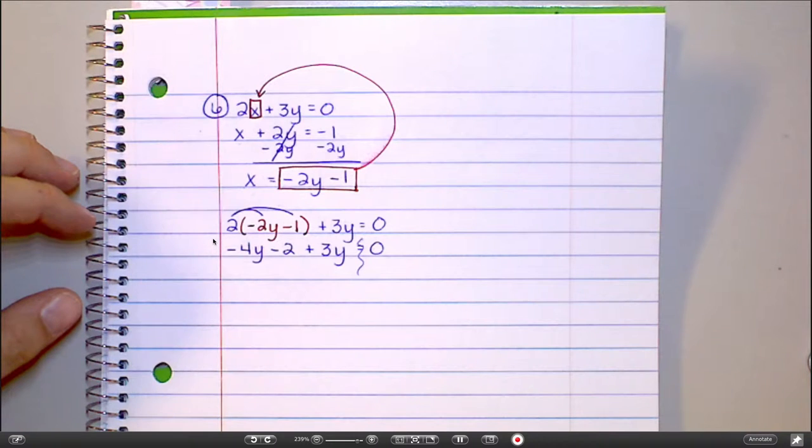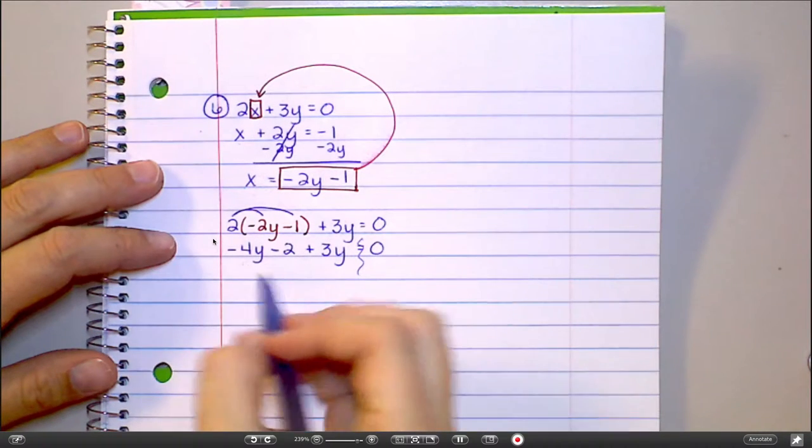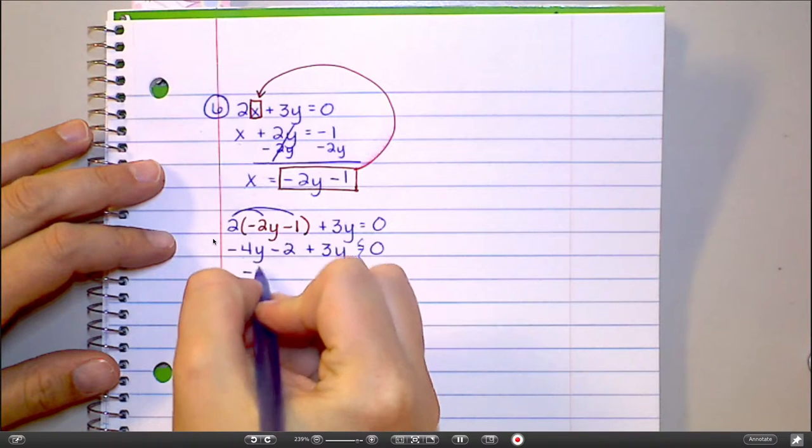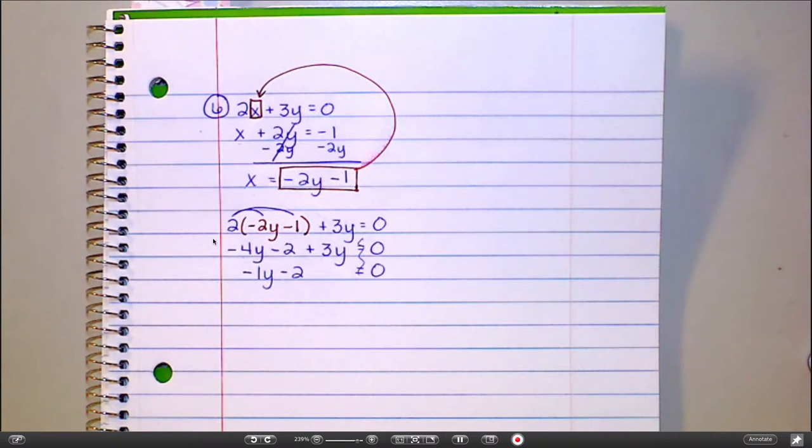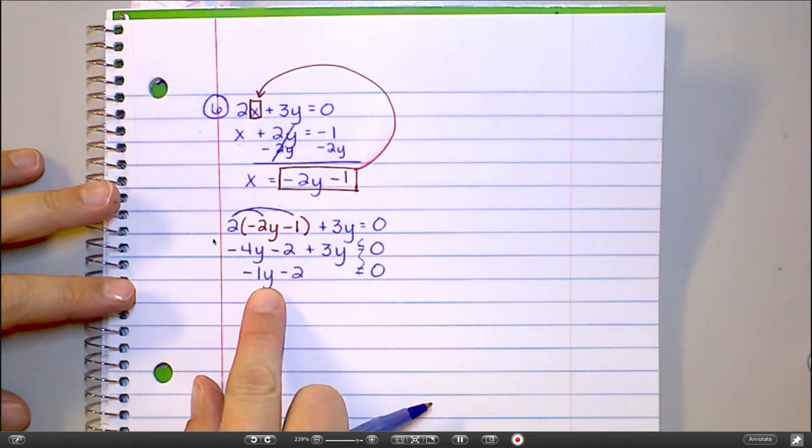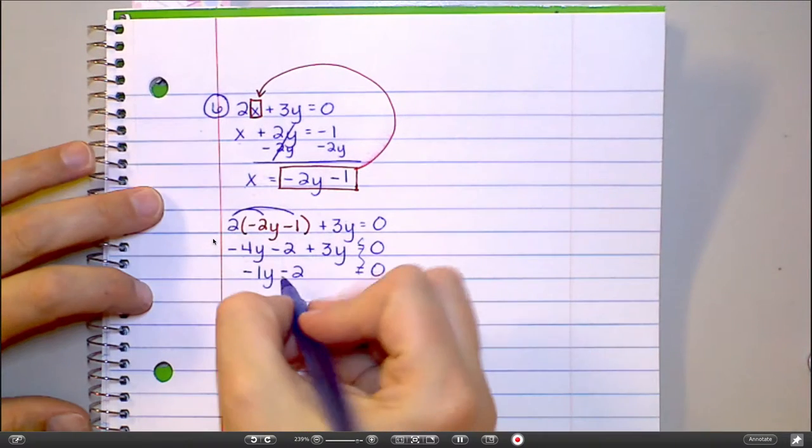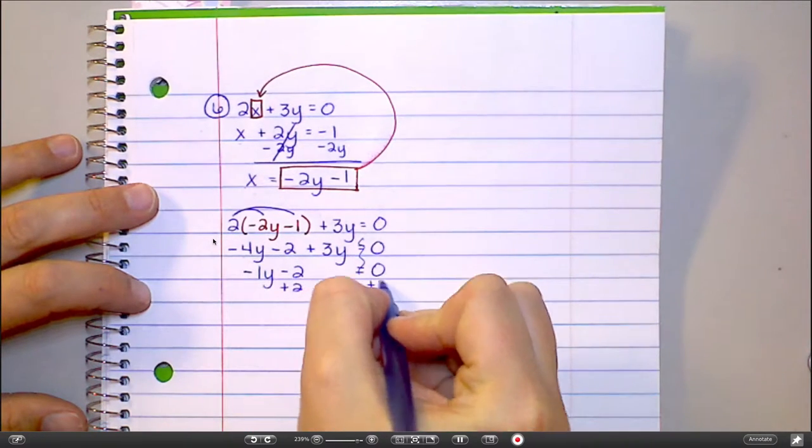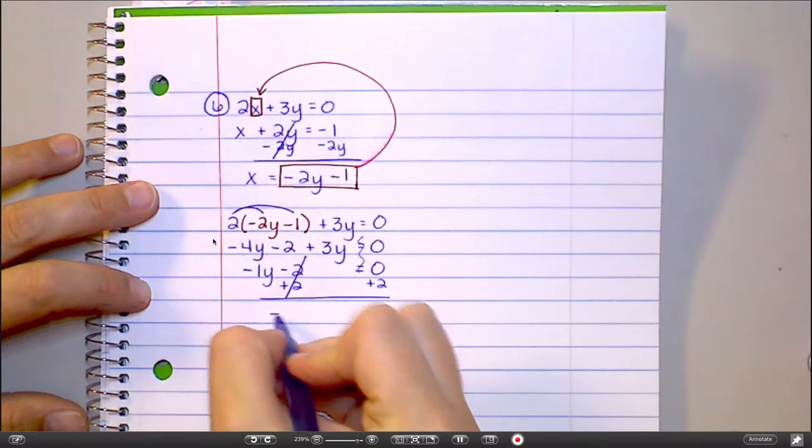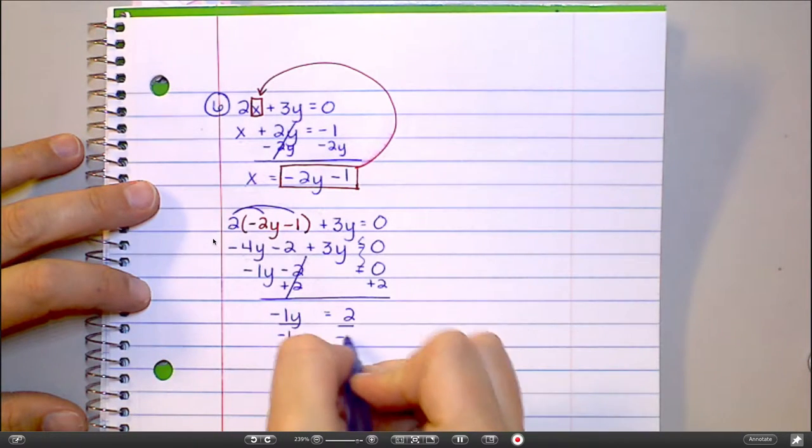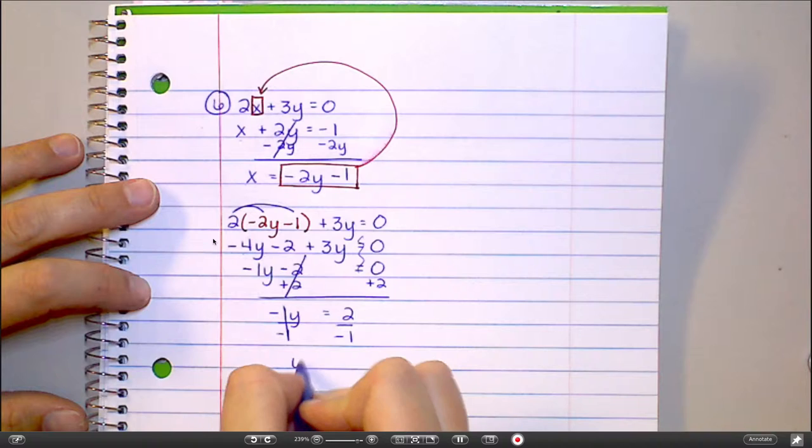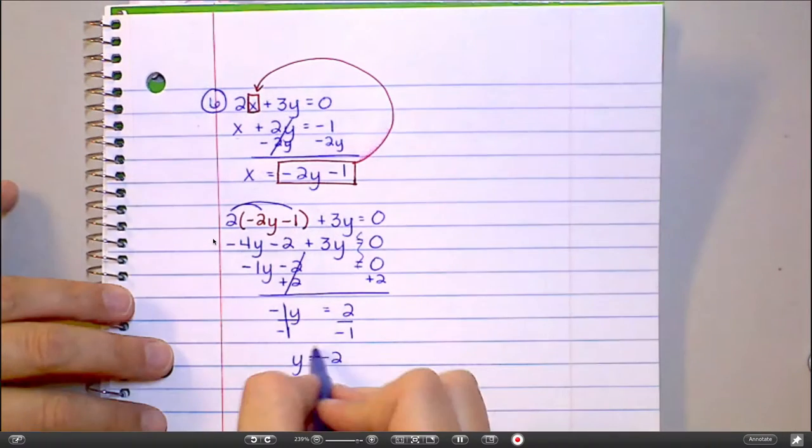So negative 4y plus 3y is negative 1y minus 2 is equal to 0. James, now what? Add the 2. So you would add the 2. Add the 2. So negative 1y equals 2, and then let's divide by negative 1, and I've got y equal to negative 2.